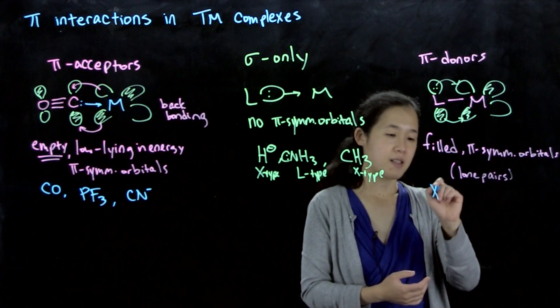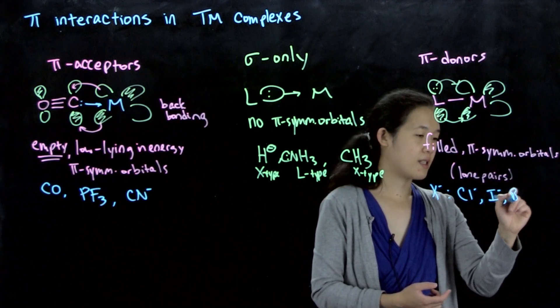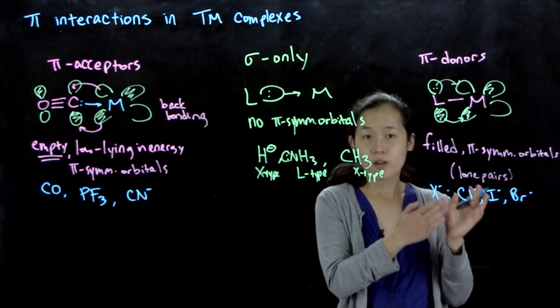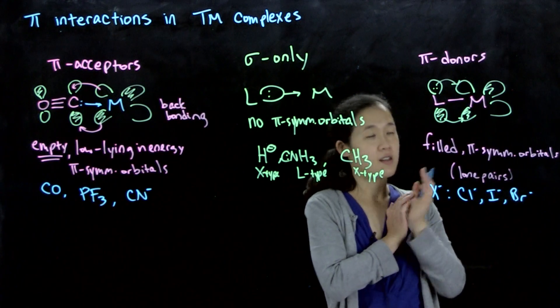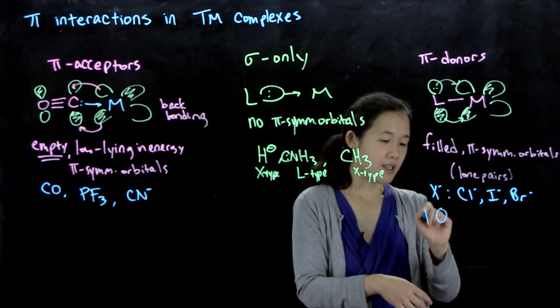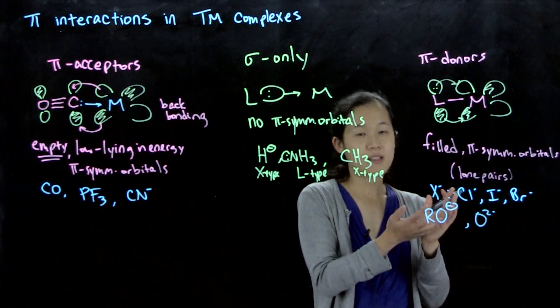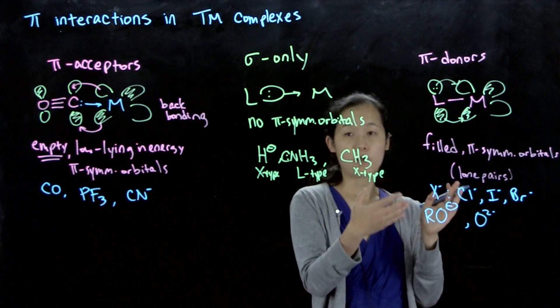For pi-donors, any halides, so X⁻, you have chlorides, iodides, bromides, et cetera. These have filled lone pairs and then these can donate pi-symmetry. Any other lone pairs, let's say alkoxides, for example, or maybe oxides. Things with filled lone pairs, these can be pi-donors.